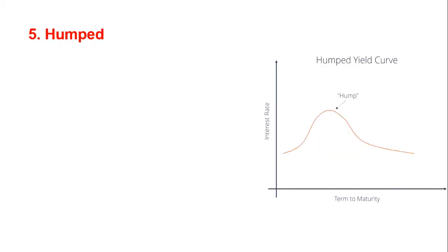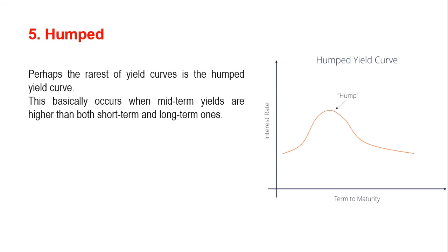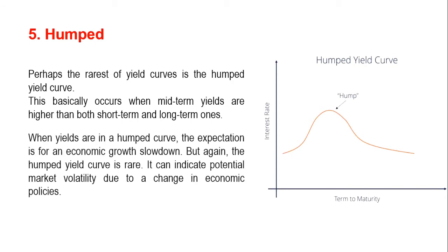Let's move on to the humped yield curve. What is a humped yield curve? Perhaps the rarest of yield curves, it occurs when mid-term yields are higher than both short-term and long-term ones. When yields are in a humped curve, the expectation is for an economic growth slowdown. The humped yield curve is rare and can indicate potential market volatility due to a change in economic policies.